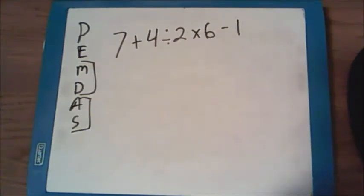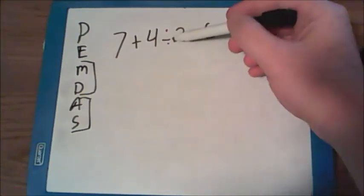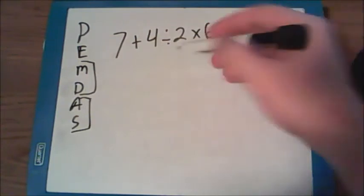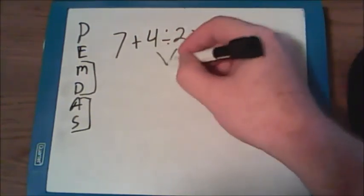So we'll have to look for parentheses. There are none. Exponents. There are none of those either. But we do have multiplication and division. Now remember, I said we'd have to do both of these at the same time, whichever comes first, from left to right. So the division comes before our multiplication. So 4 divided by 2 gets me to 2.